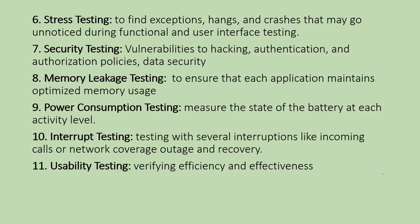Next is Power Consumption Testing — it tests battery levels. For example, if you use games, there is a chance of high power consumption, so we do power consumption testing. Next is Interrupt Testing — if you use mobile apps, you can receive an SMS or a network change. You check the interruptions to ensure there are no problems when the app is interrupted. Next is Usability Testing — that means checking effectiveness. You verify the user requirements are met and the app is usable.